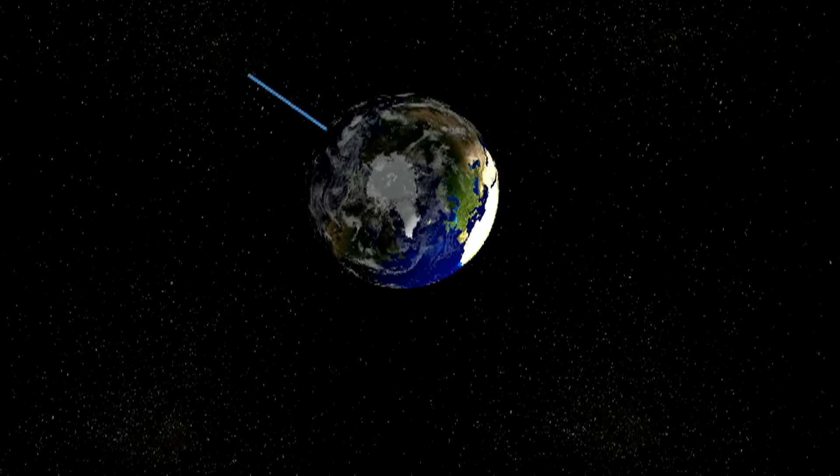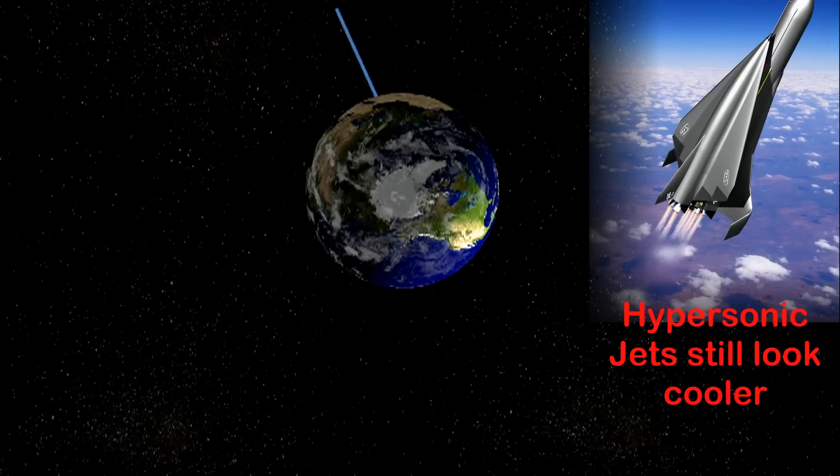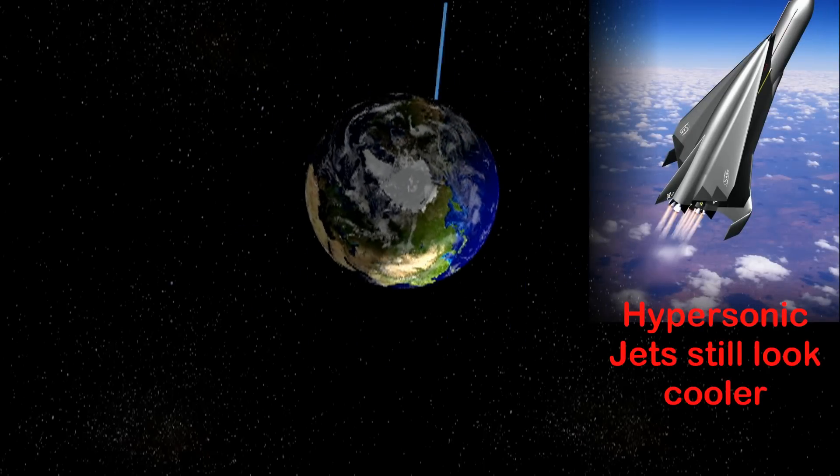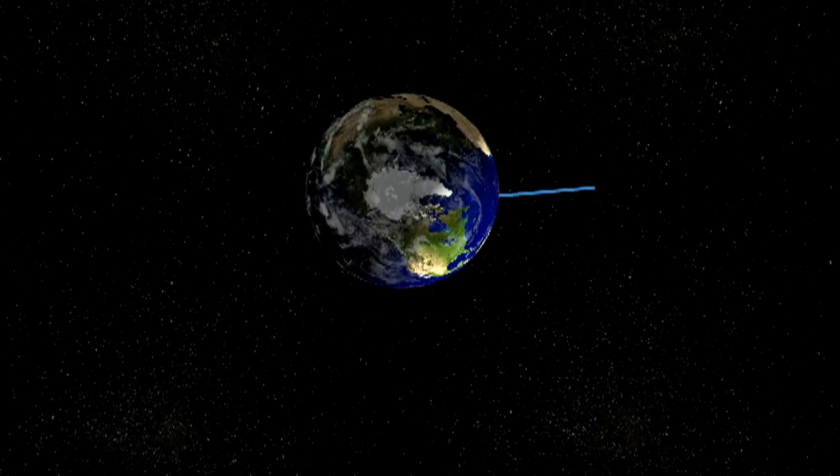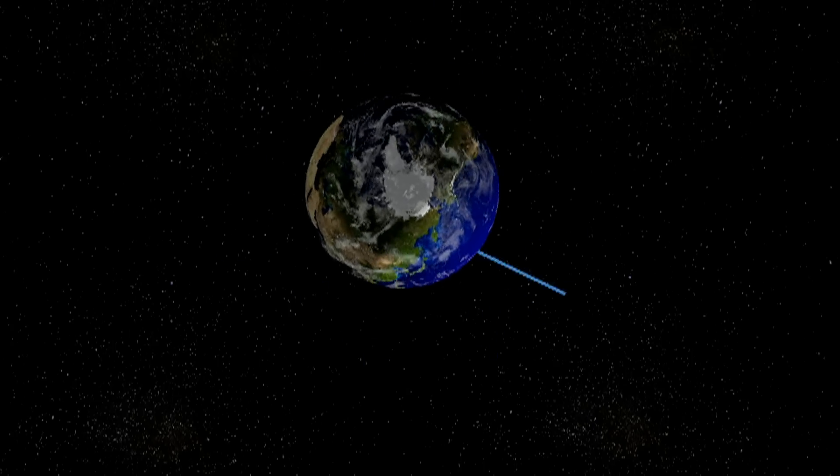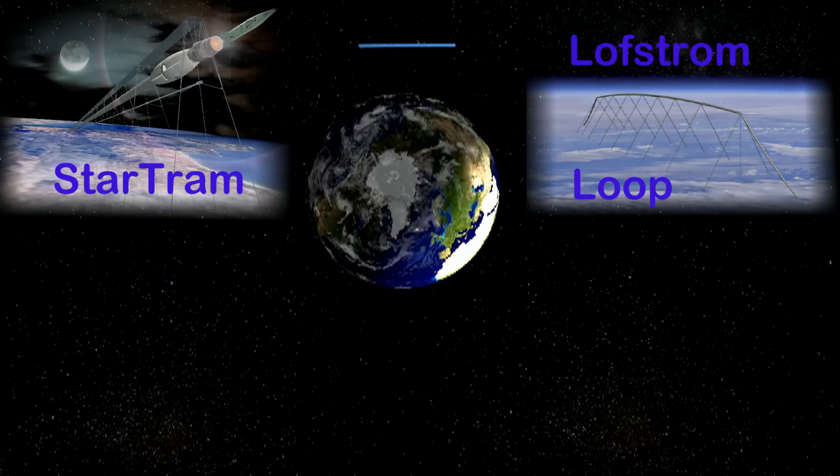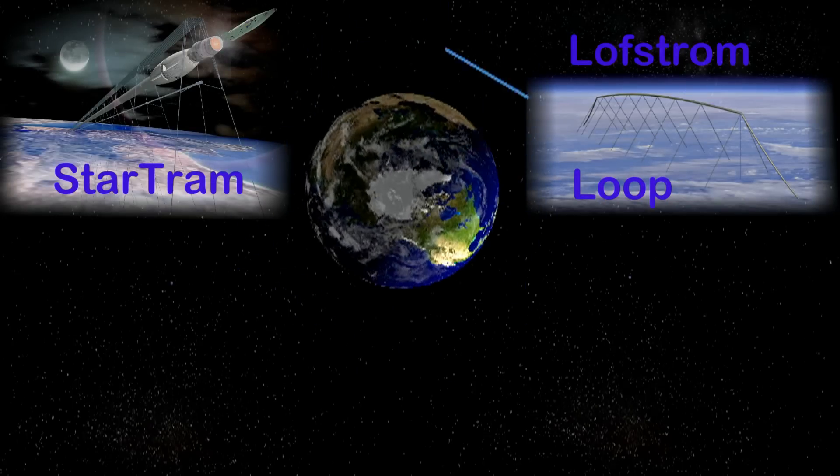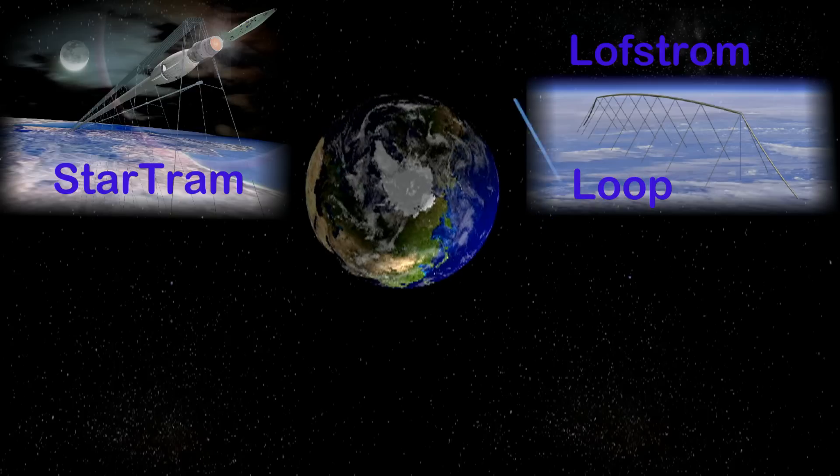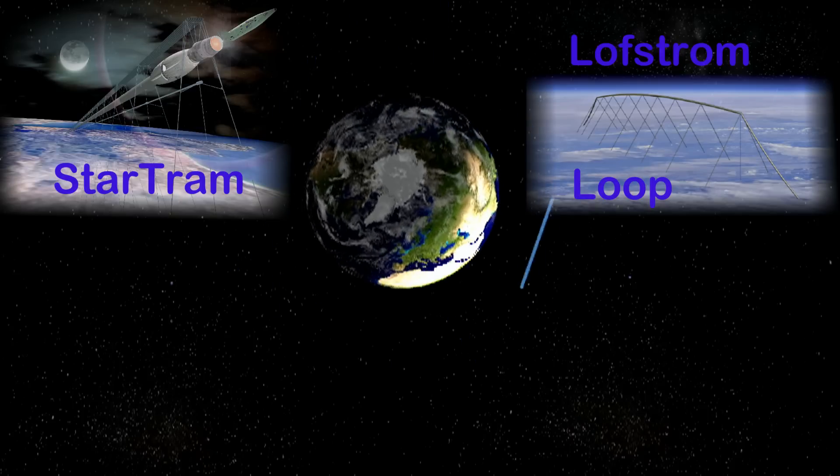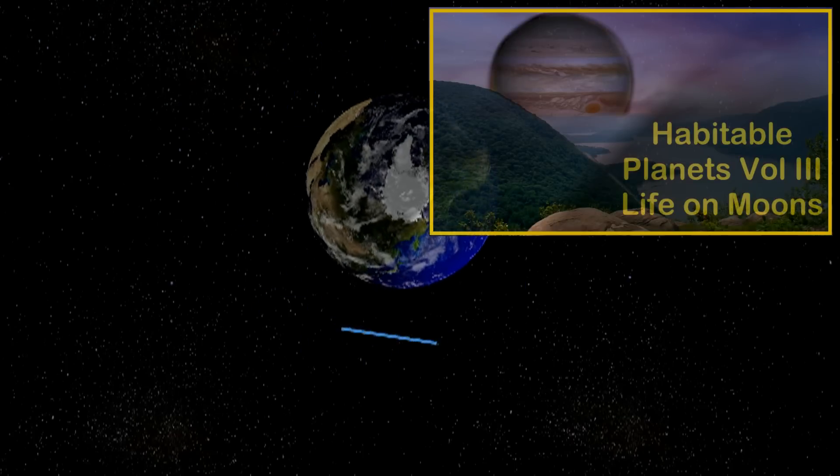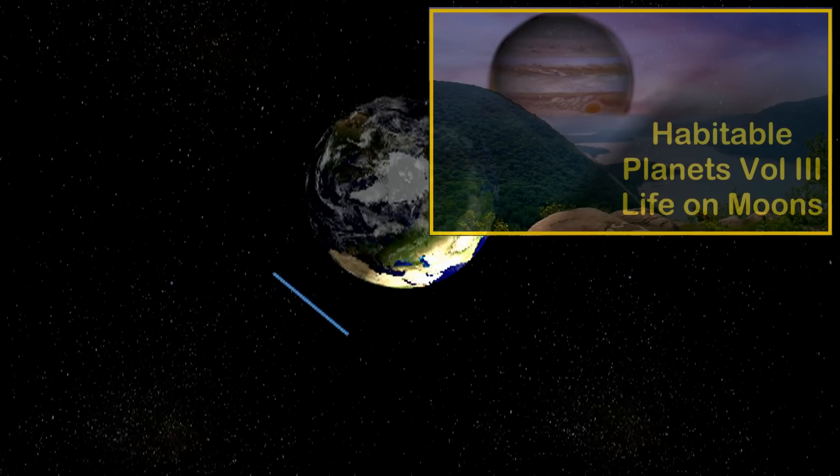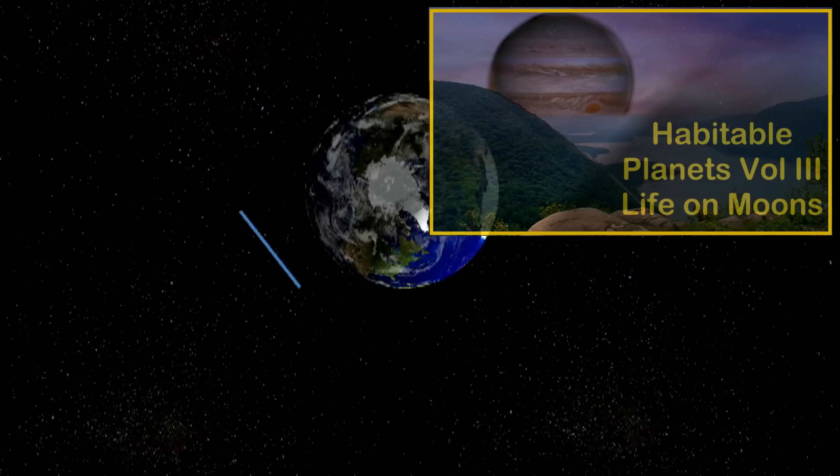But you still need a hypersonic launch vehicle to get to the hook, and while we can build those, it's possible one might want to use a skyhook in tandem with a maglev launch system like the Lofstrom Loop or Star Tram. Types of ground-based megastructures we'll be looking at in our next video in the series. Before we look at those however we'll be jumping back to our other series on habitable planets and looking at Earth-like worlds orbiting as the moons of gas giants.